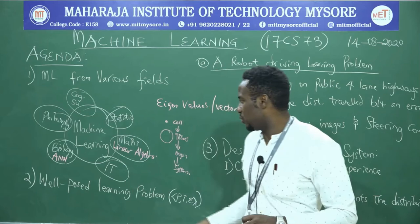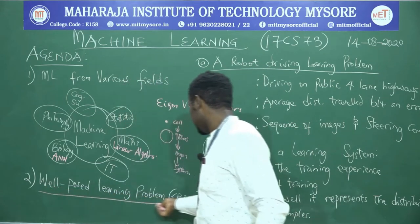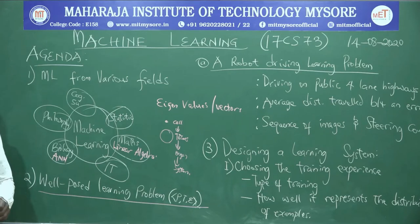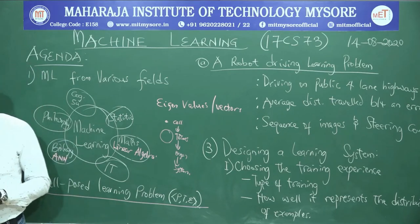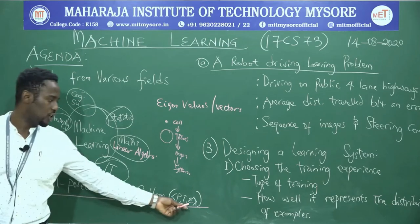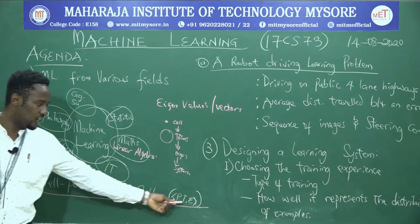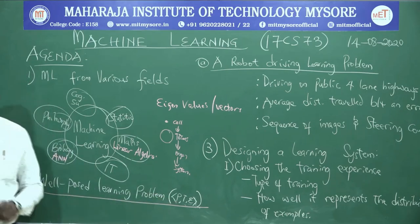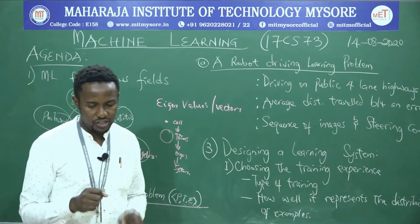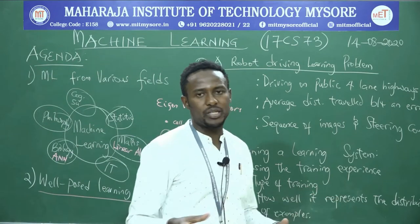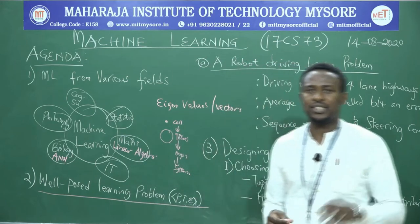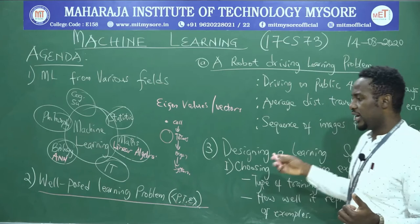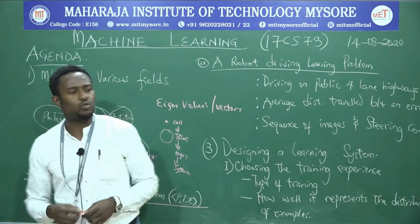According to Tom Mitchell, a computer program is said to learn from experience E with respect to some class of tasks T and performance measure P, if its performance at that task as measured by P improves with experience E. It looks cumbersome but there are three key words that stand out: performance measure, task, and experience.